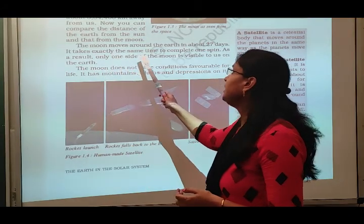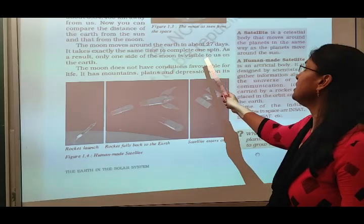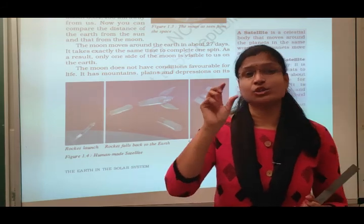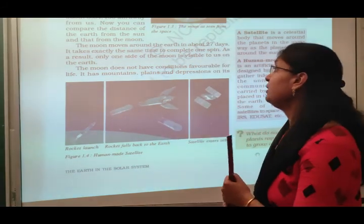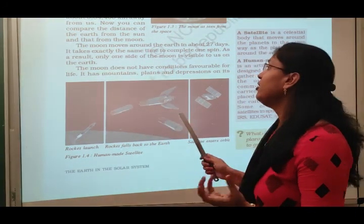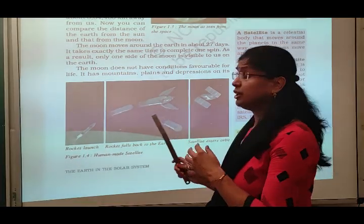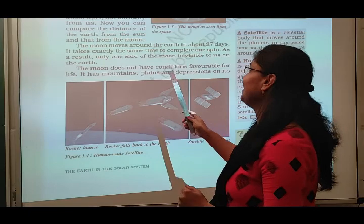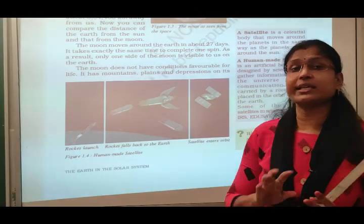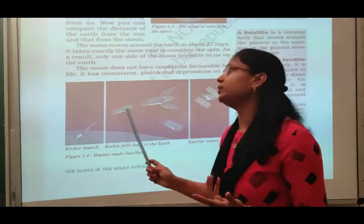The moon takes exactly the same time to complete one spin as it does to orbit the earth. As a result, only one side of the moon is visible to us on earth. Earth takes 24 hours to complete one spin on its axis, while the moon takes 27 days — because of this, we always see only one side of the moon.